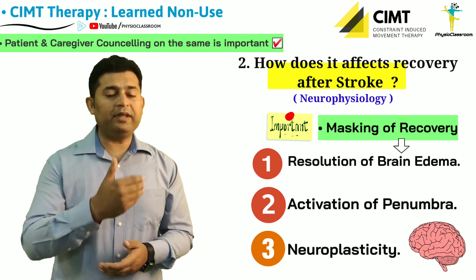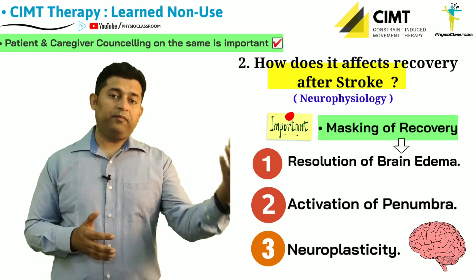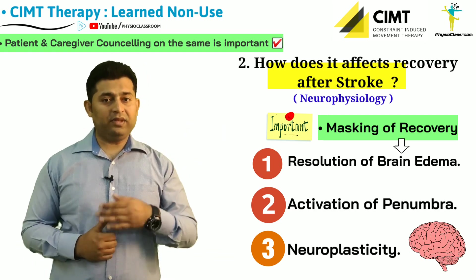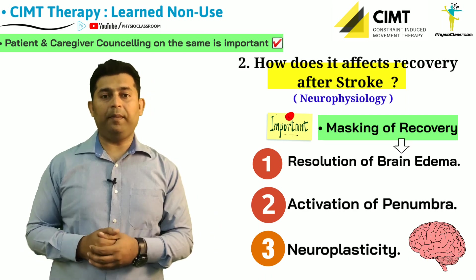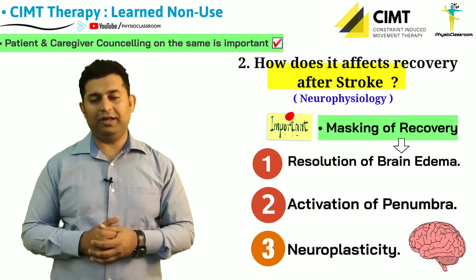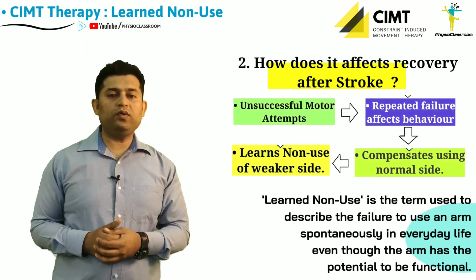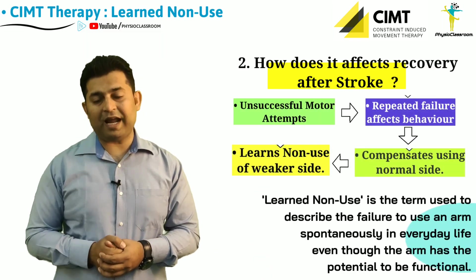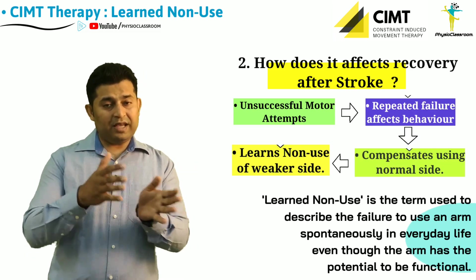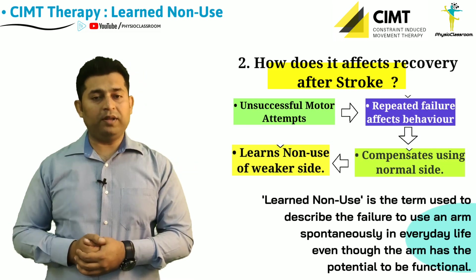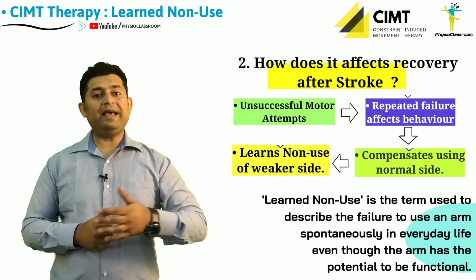This helps facilitate repeated attempts to utilize the weaker arm functionally. Therefore, learned non-use can also be described as a condition in which there is a failure on the part of the patient to utilize the weaker side to carry out day-to-day activities, although they have the potential to use it.